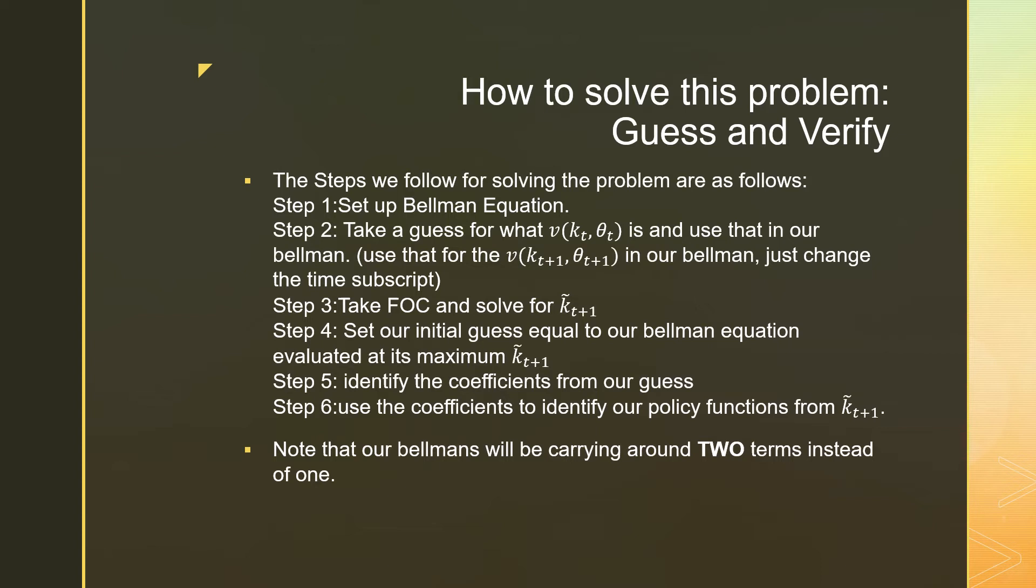We're going to identify the coefficients from our guess in order to get a real policy function KT plus 1. Note that our Bellman will be carrying around two terms instead of one. We're going to be carrying around KT, which is the cake size at a specific period and the shock at that period. Now, our consumer is not in control of that shock, but it's still something that we're going to have to carry around with us because that's what affects the value directly.